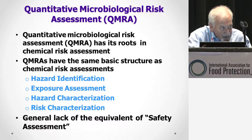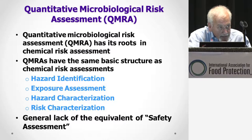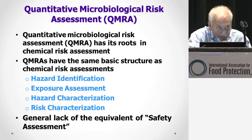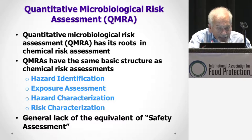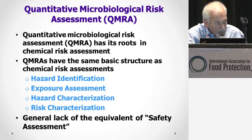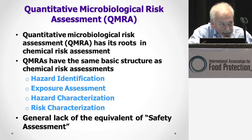In doing microbiological risk assessments, particularly quantitative ones, we built on what we knew from the chemical risk assessment era. Many of the original players in microbial risk assessments were trained as food safety people, a combination of microbiology and toxicology. We basically took the same format of hazard identification, exposure assessment, hazard characterization — which is largely dose-response evaluations — and finally a risk characterization. What we did not use to any great extent was safety assessments, and I will explain where safety assessments can and generally are not used in microbial risk assessment.